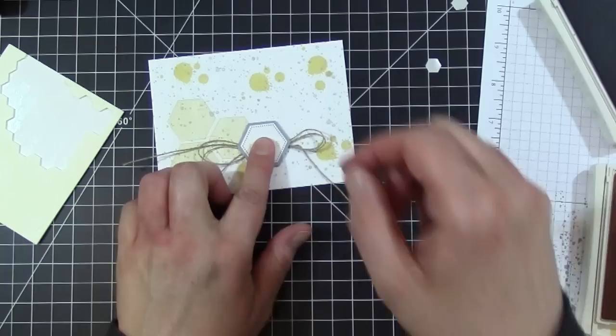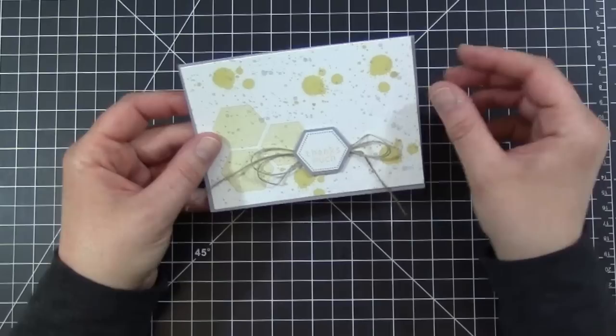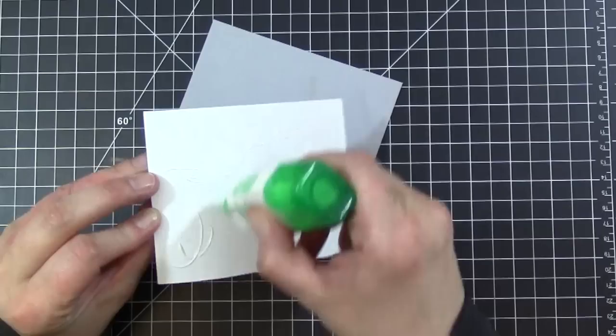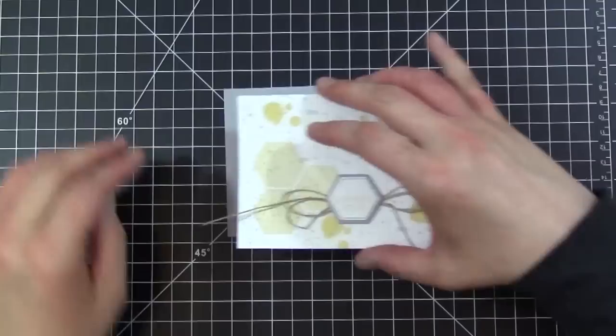I have a piece of Smokey Slate cardstock that is cut an eighth of an inch larger than my Whisper White. I'm just going to go ahead and adhere that down. I'm using my Tombow Mono because I ran out of my Snail adhesive.